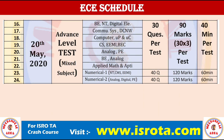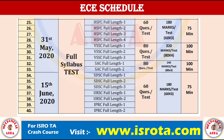For electronics advanced level, there will be two numerical tests with the same pattern as mechanical. For the full length tests, there will be 4 tests for HSFC, 3 tests for VSSC, 2 tests for another center, and 2 tests for URSC. Timing will be different from the official exam.